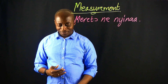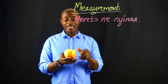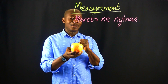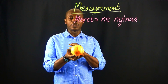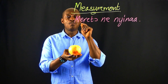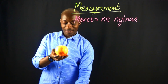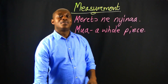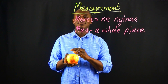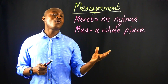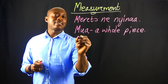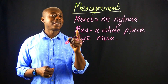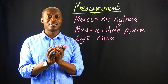Now look at this — a whole piece. How do we say 'a whole piece' in Twi? In Twi we say MWA. That is a whole: MWA. So this piece here is MWA, a whole piece. If it is a whole, we say EYE MUA, meaning it is a whole piece.